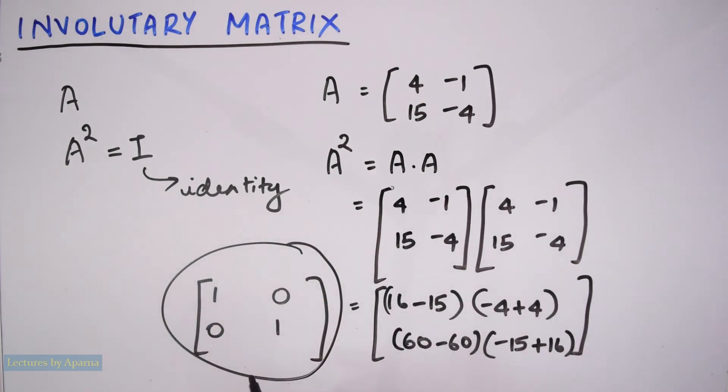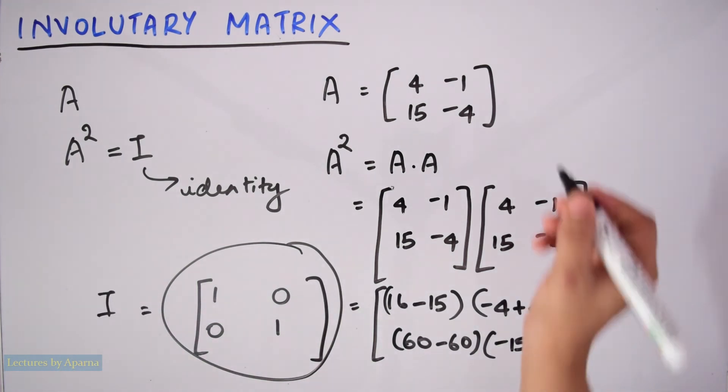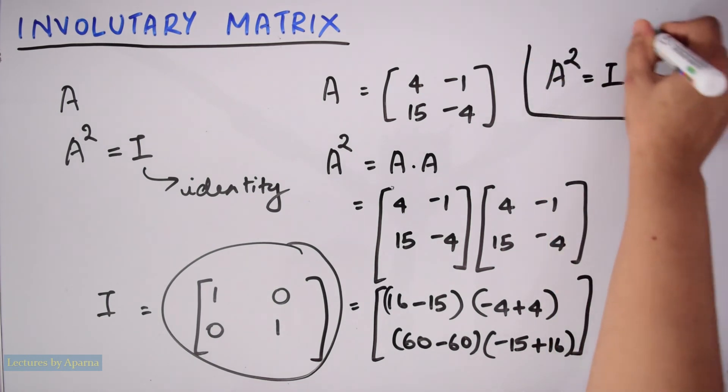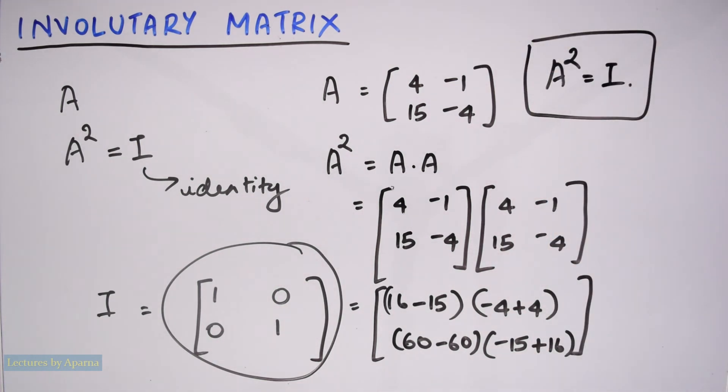So this is an identity matrix. So this is equal to I. So we got A square is equal to I. Hence, A is an involuntary matrix.